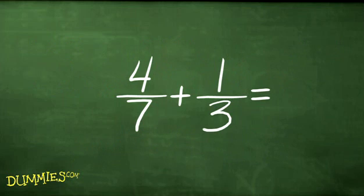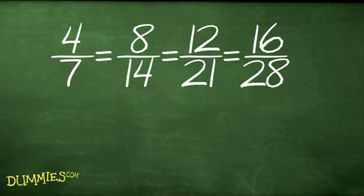The fractions four-sevenths and one-third aren't compatible. You can't combine or compare them. First, you'll have to convert the fractions so that they have the same number in the denominators. The fraction four-sevenths can be eight-fourteenths or twelve-twenty-firsts, and more.